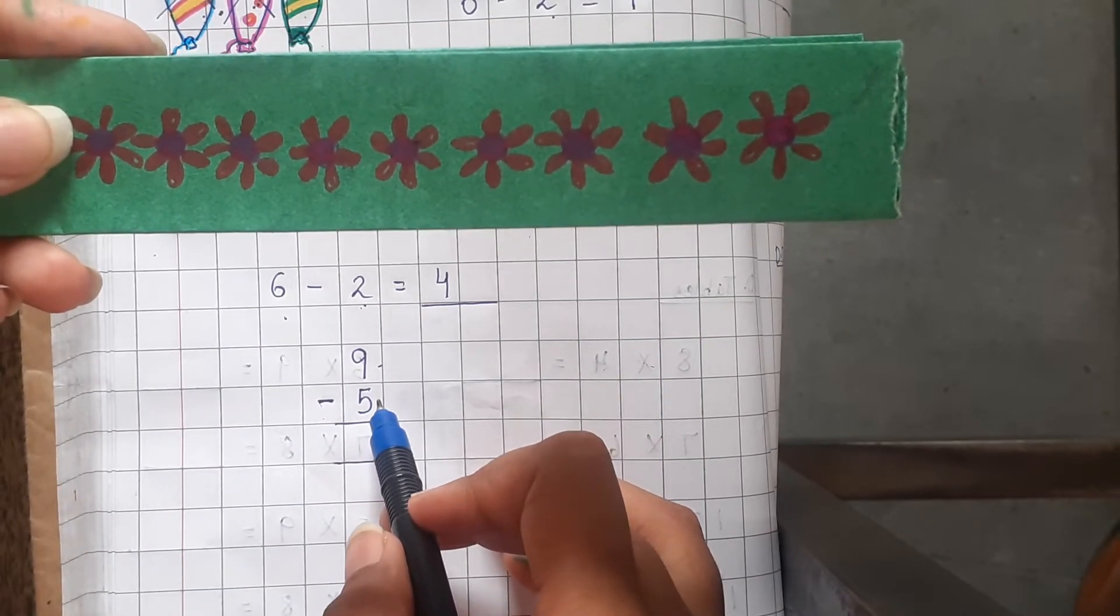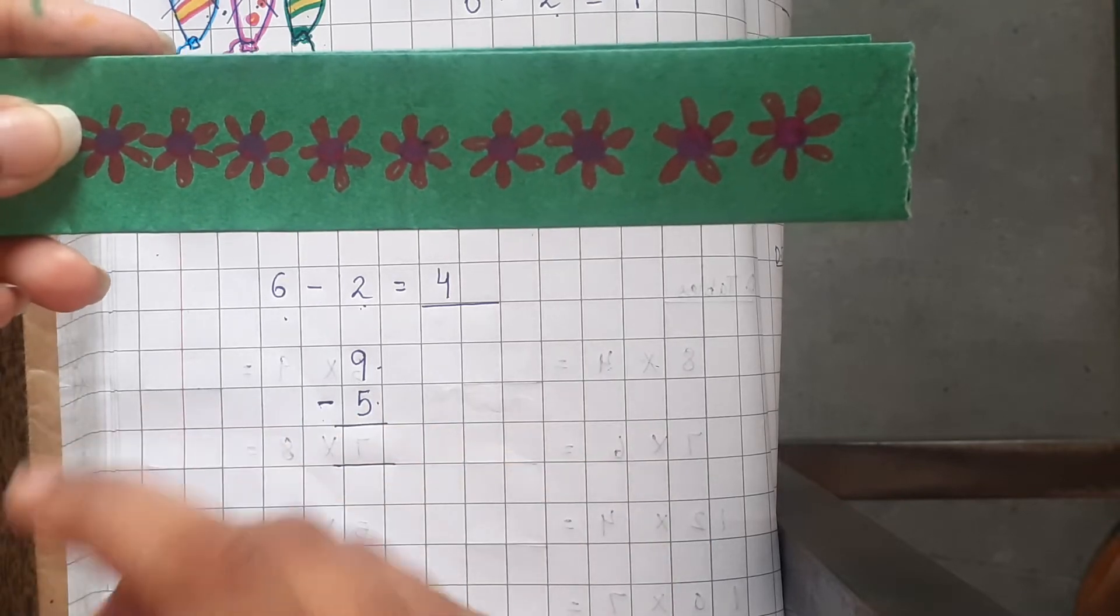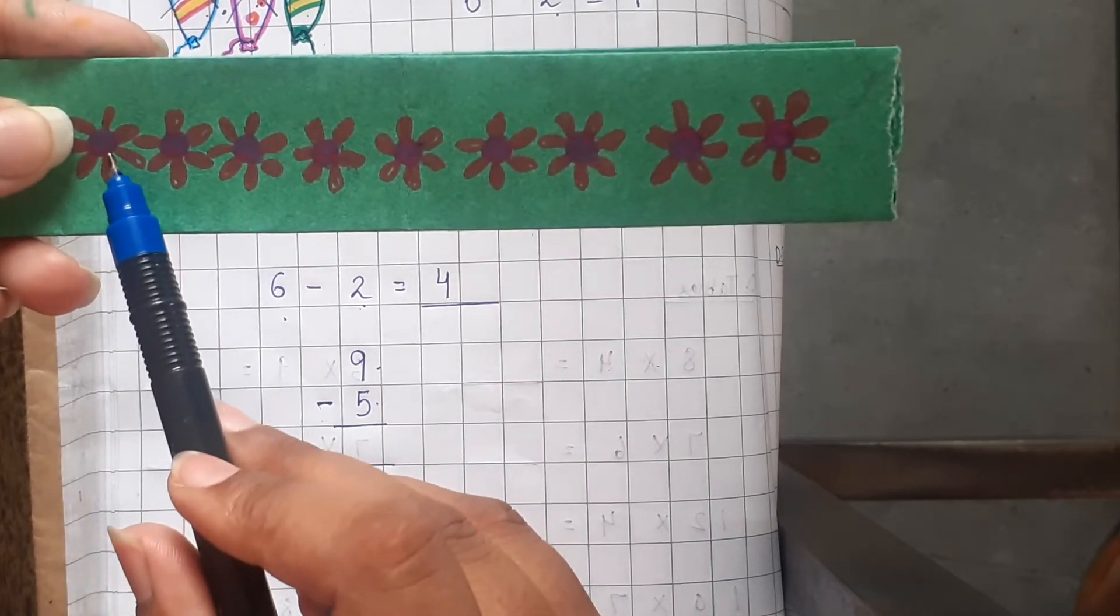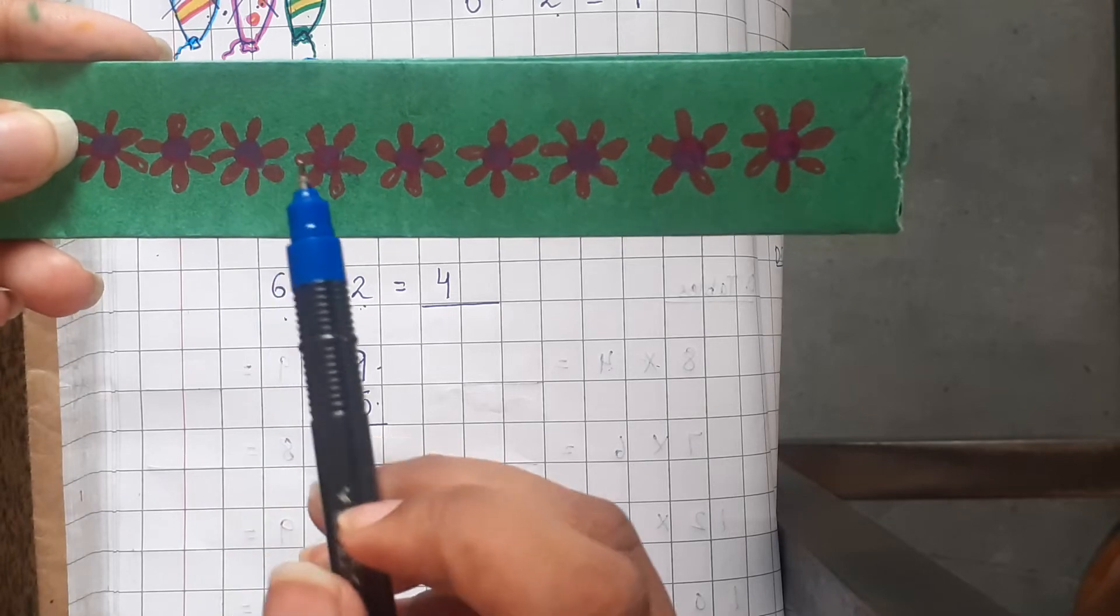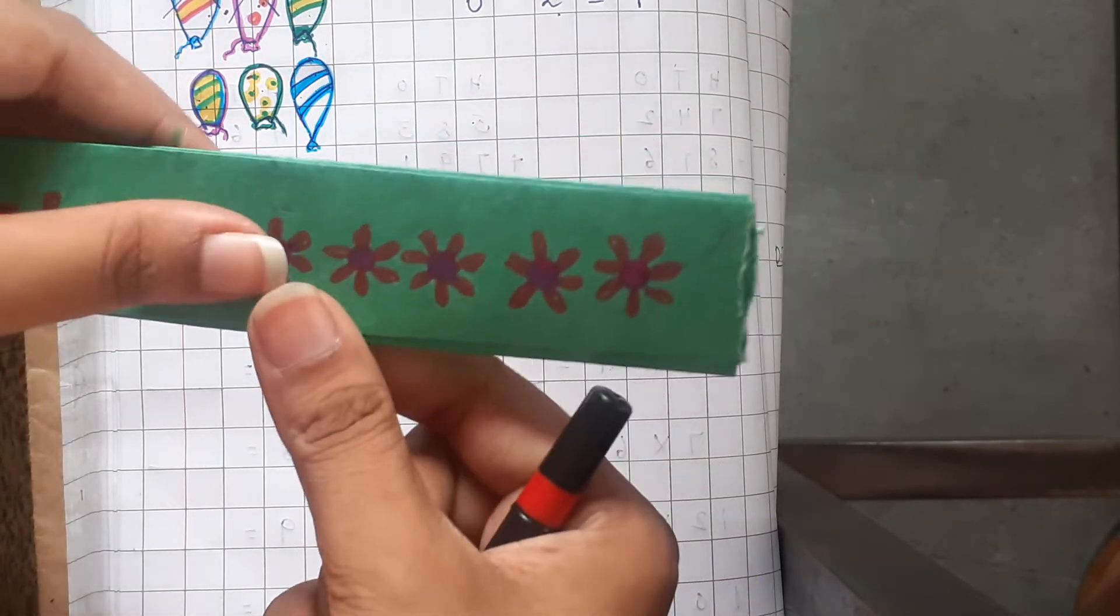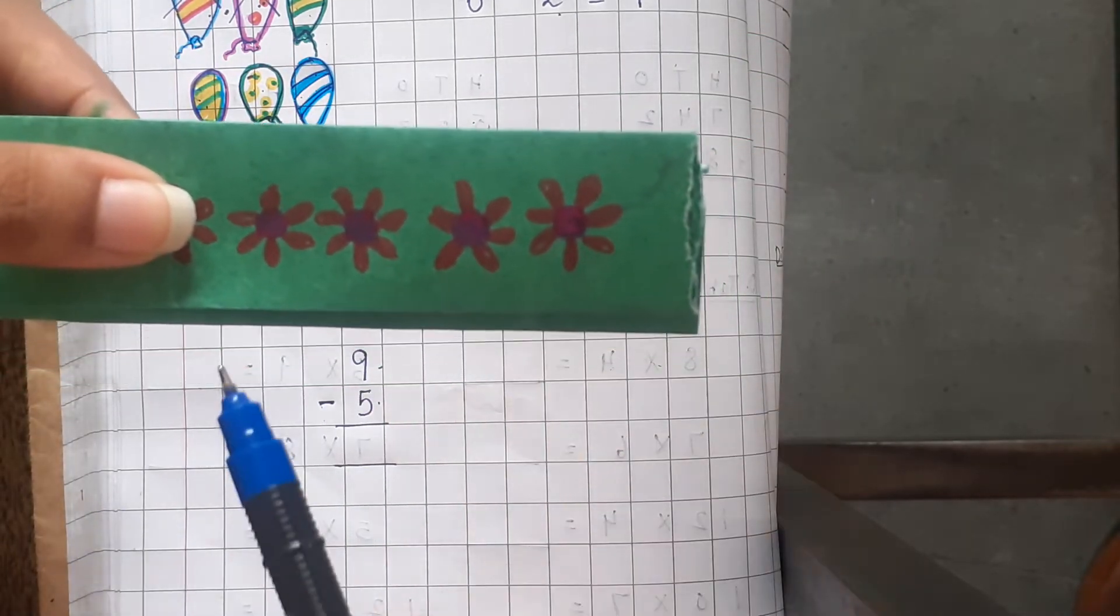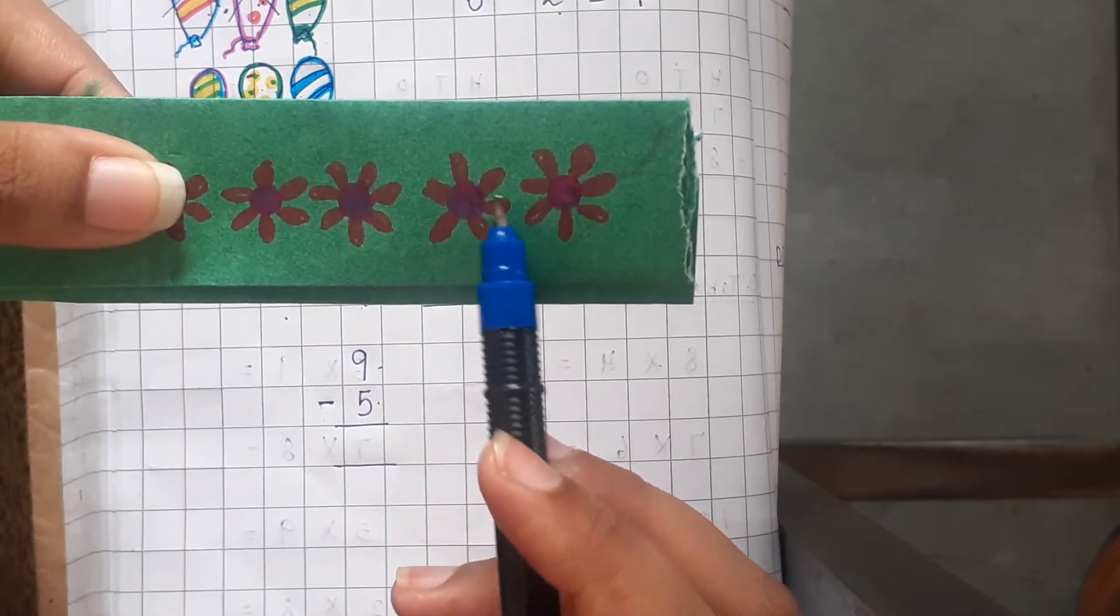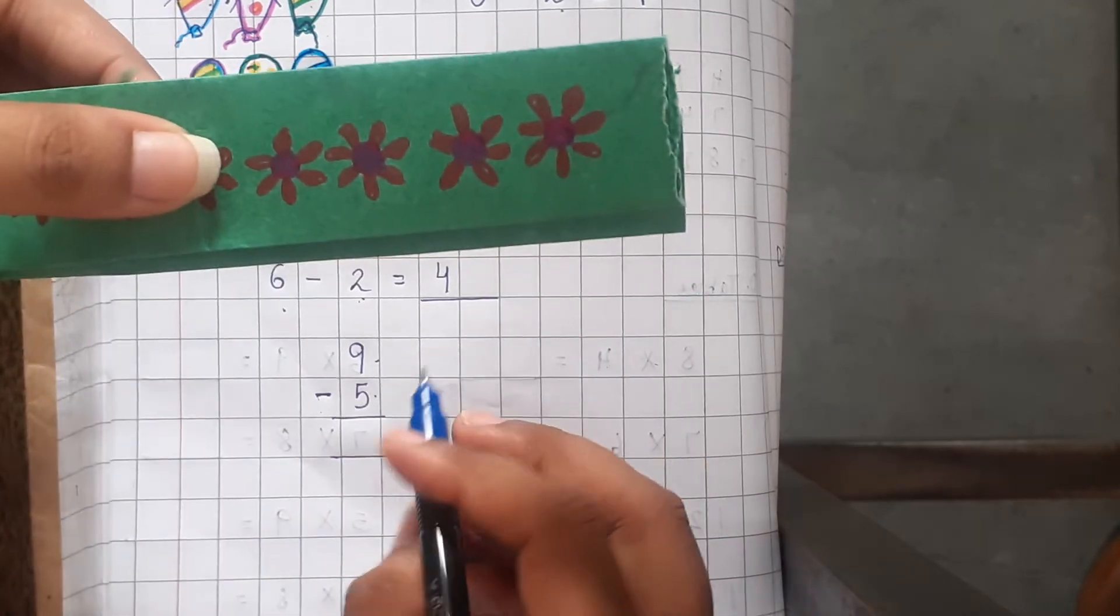Out of this 9, we have to take out 5 flowers. So let us remove 5 flowers: 1, 2, 3, 4, 5. So these flowers are removed. Now, 1, 2, 3 and 4. 4 are left.